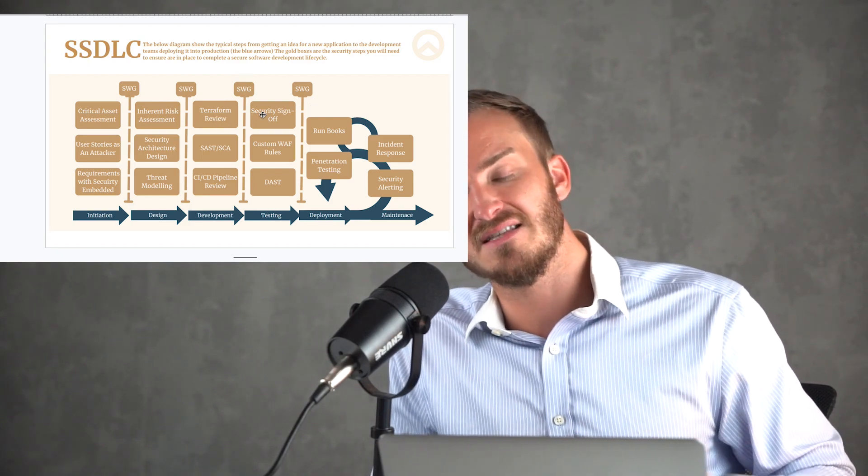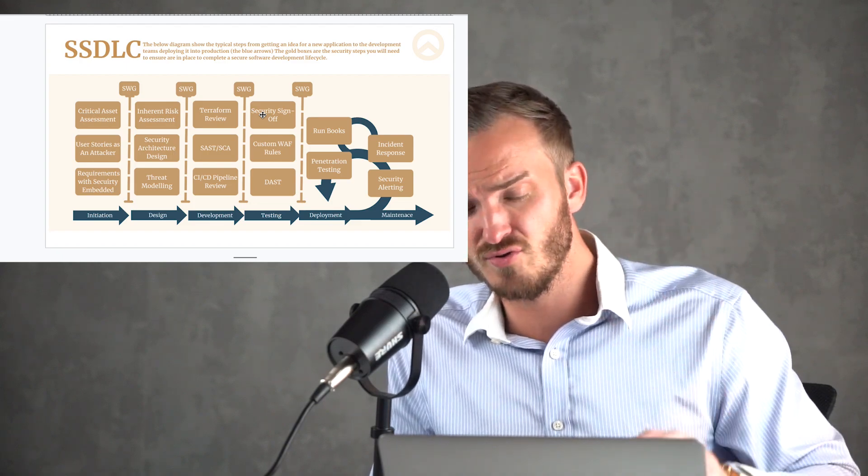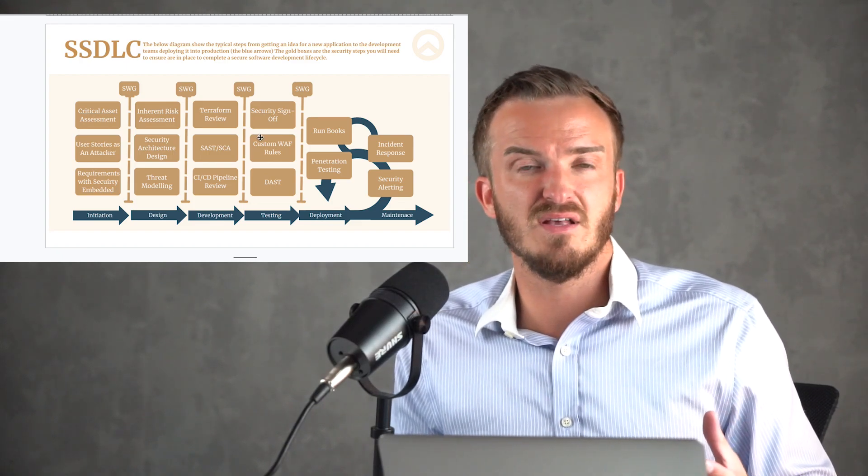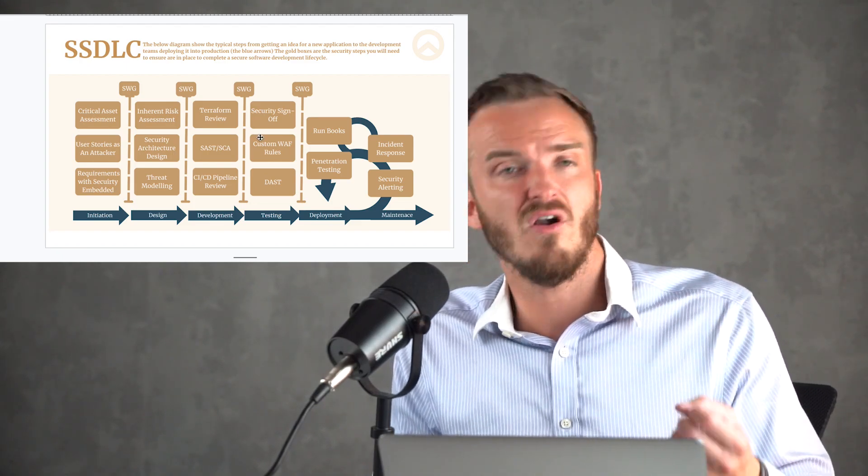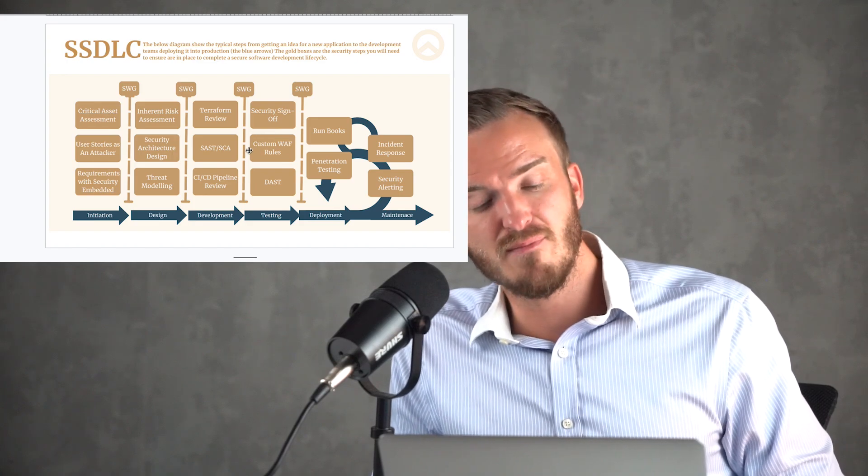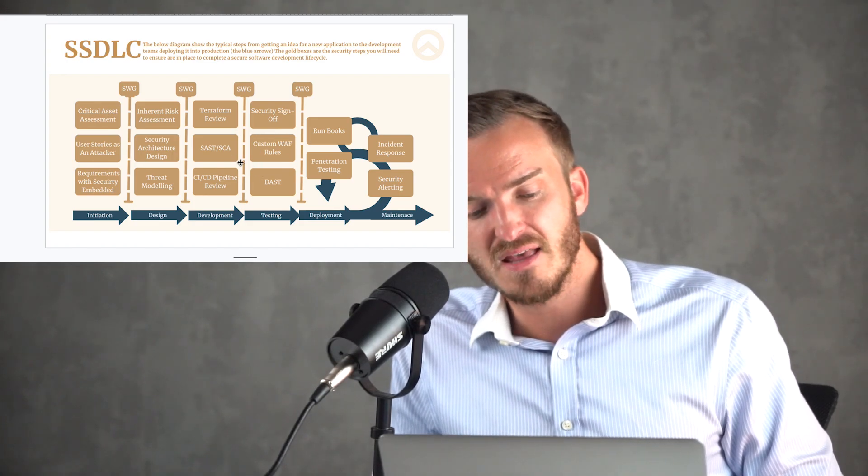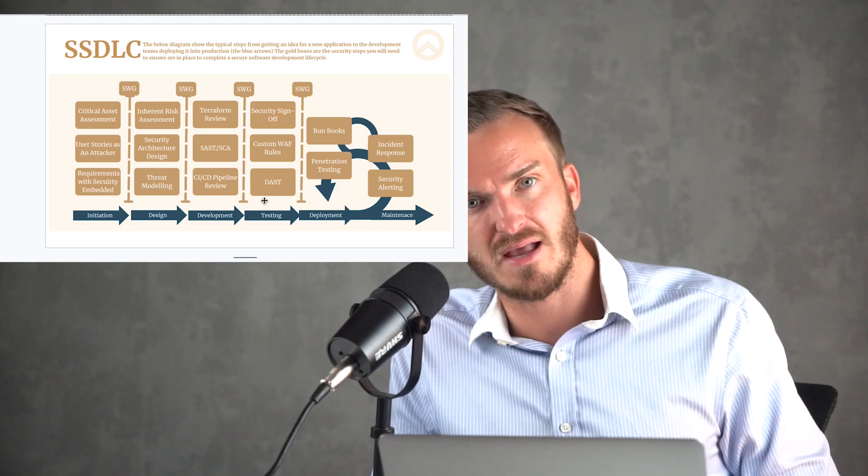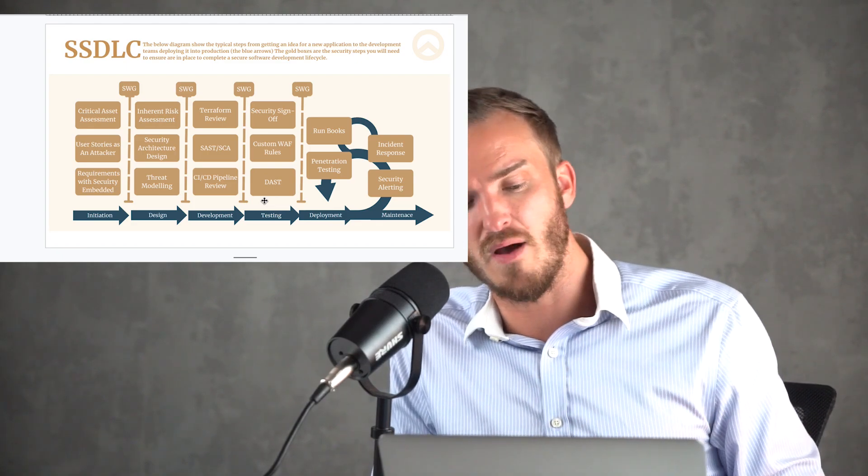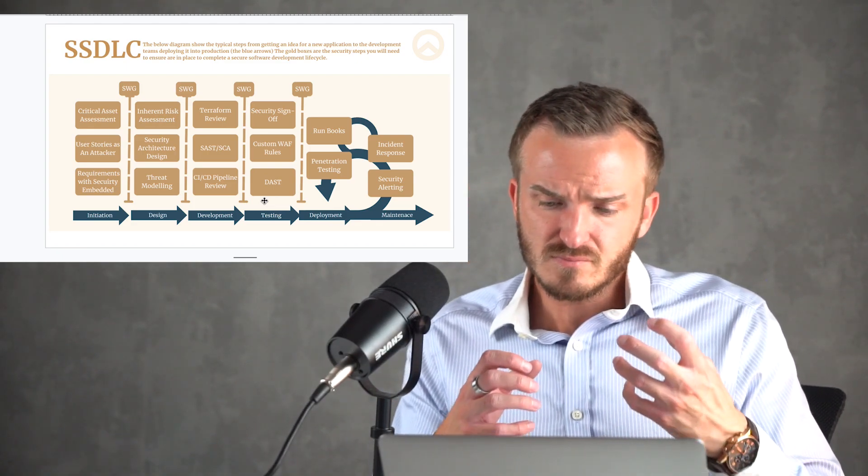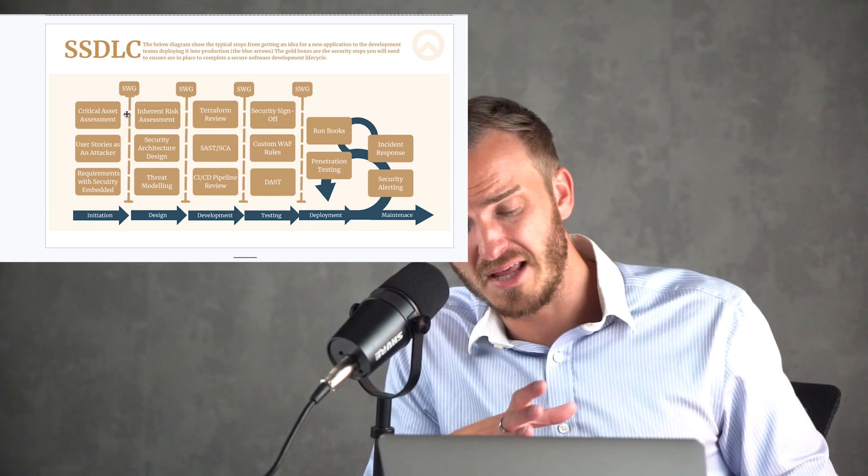Then we're going to go into the testing phase. And this is where we provide pretty much our final security sign-off, where we'll get everyone in a meeting and we'll go through any current risks. And we say, right, we're happy to sign this project off. Put in place the custom WAF rules from the threat modeling. Then we run our DAS scans, dynamic application security testing, which I'm going to teach you about in a bit. We do these at the end because you need a working application to do these off.